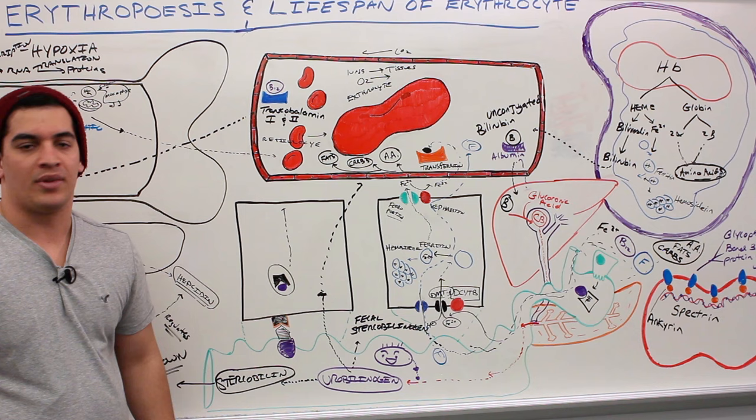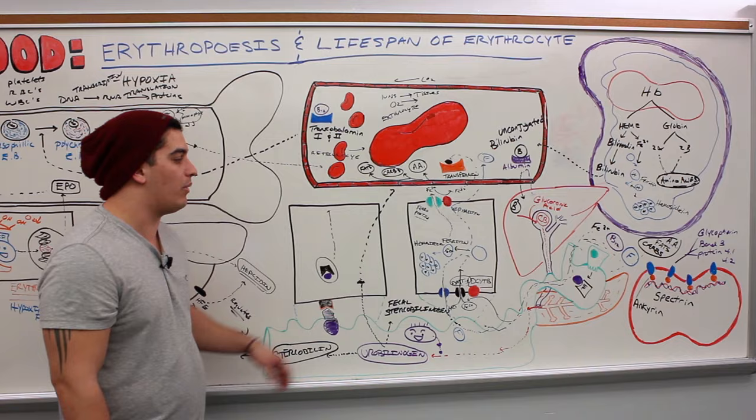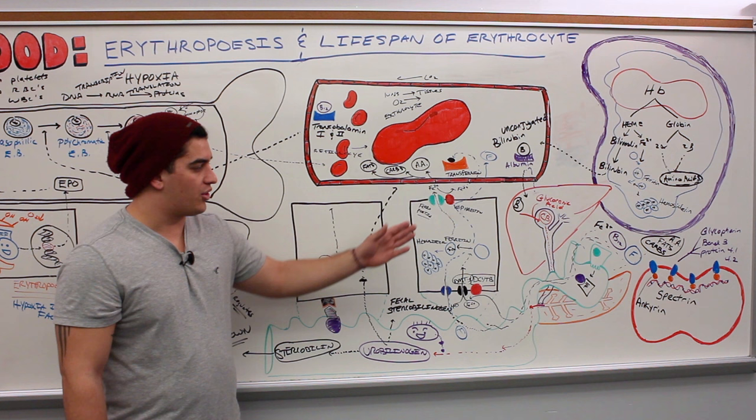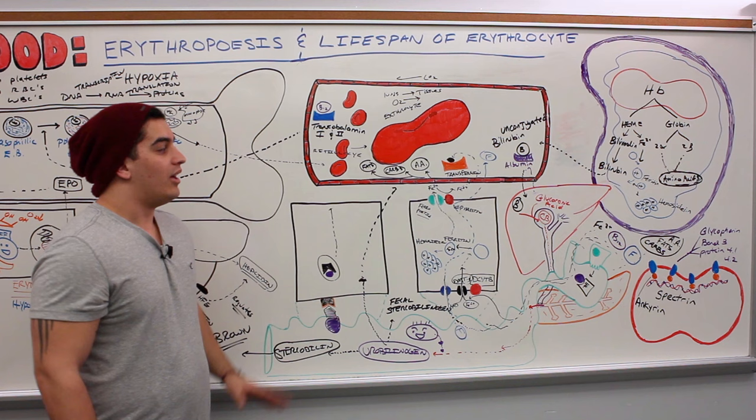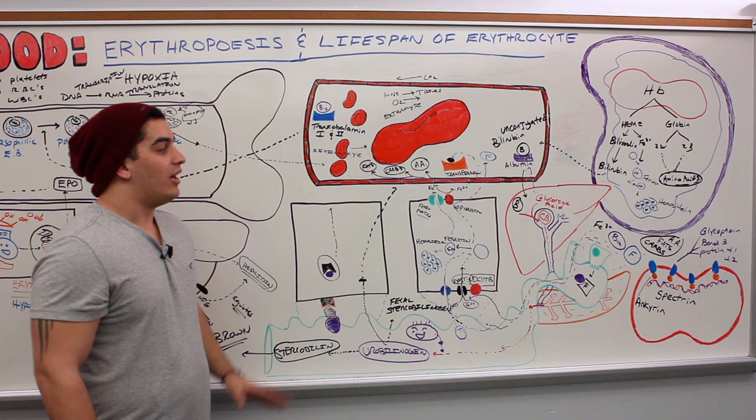And that's called stercobilin. If we don't have that color in the feces, it may indicate something going on within that biliary duct system — maybe a gallstone — which can cause backflow of bilirubin into the bloodstream and jaundice, the yellowing of the skin or sclera. We've basically gone over the entire erythropoietic process and the lifespan of an erythrocyte. I hope it helped. See you, Ninja Nerds.